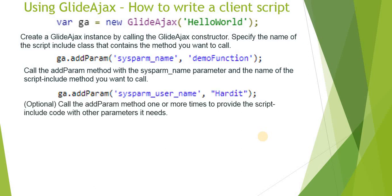To pass additional parameters to the function, use GA.addParam again with sysparam_ followed by your custom parameter name — for example, sysparam_user_name or sysparam_ci_abc_xyz. The second argument is the actual value you want to send. You can hard-code it or pass values from the form using g_form.getValue. This is completely optional — only provide it if your function is expecting a parameter.